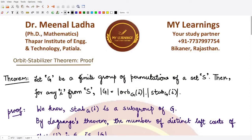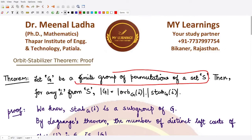Hello everyone, welcome to this video. In this video we shall be looking at the proof of the Orbit-Stabilizer Theorem. Remember that for G, if it is given to be a finite group having permutations taken from the set S, then for any member i from S we may define the order of group G as the order of the orbit of element i multiplied with the order of the stabilizer of that element i.